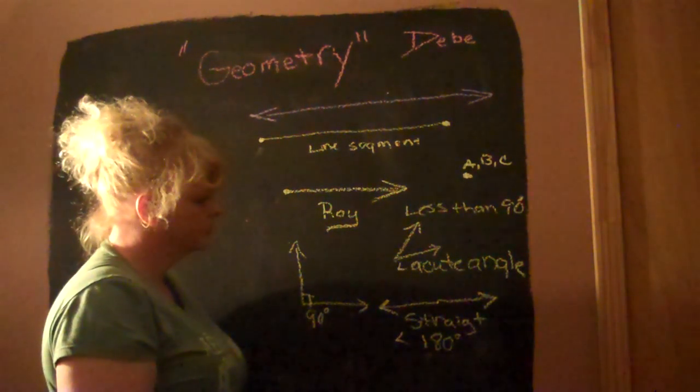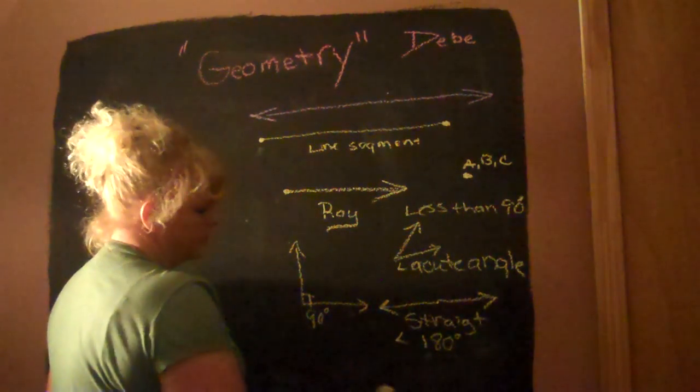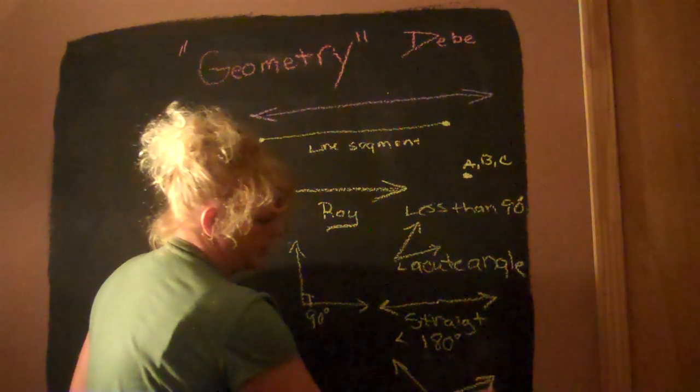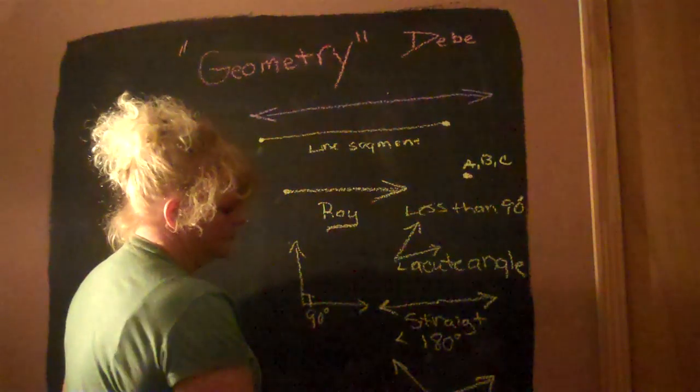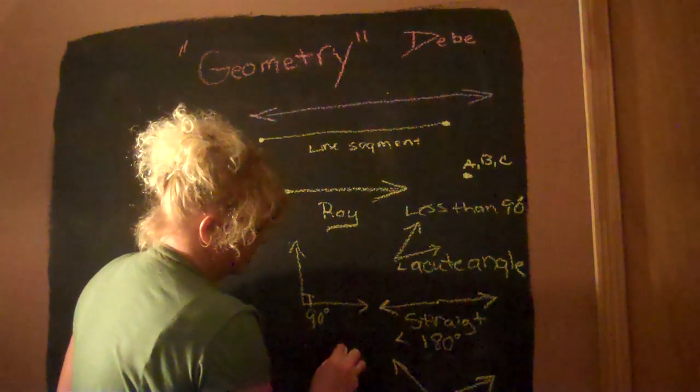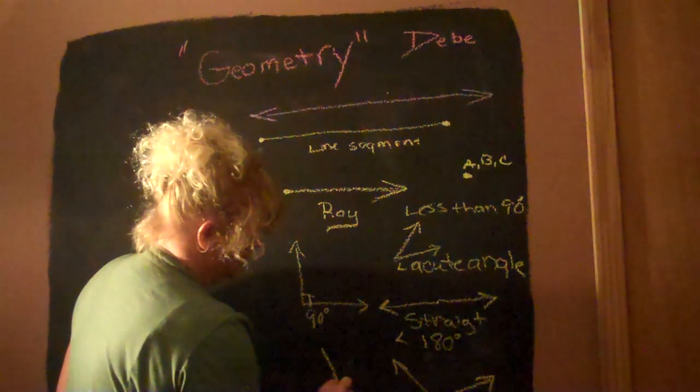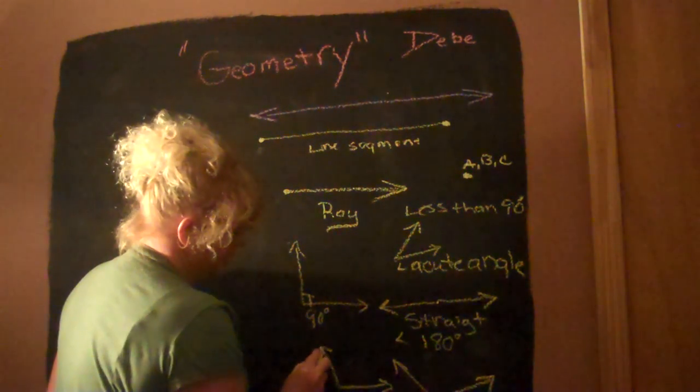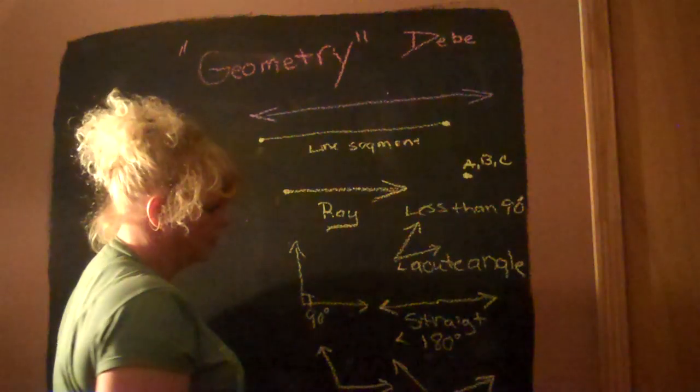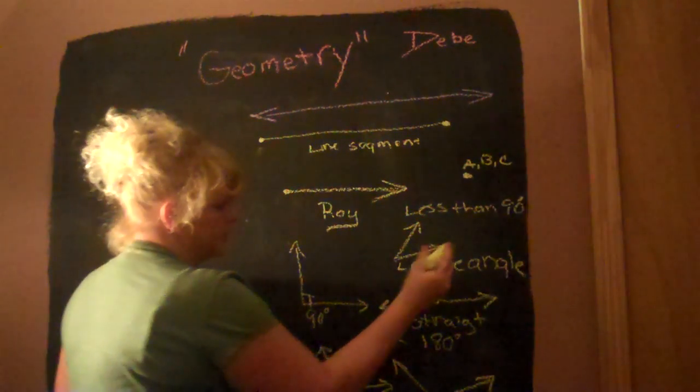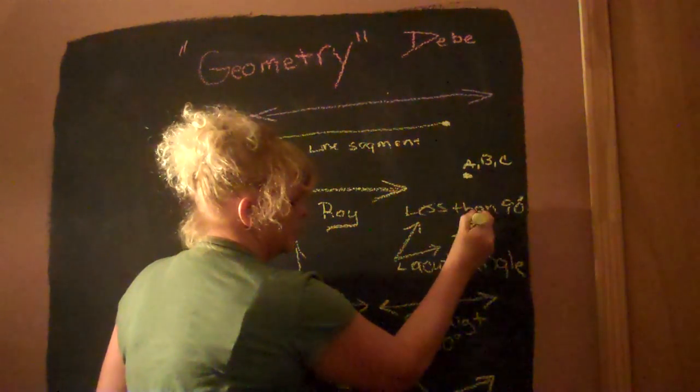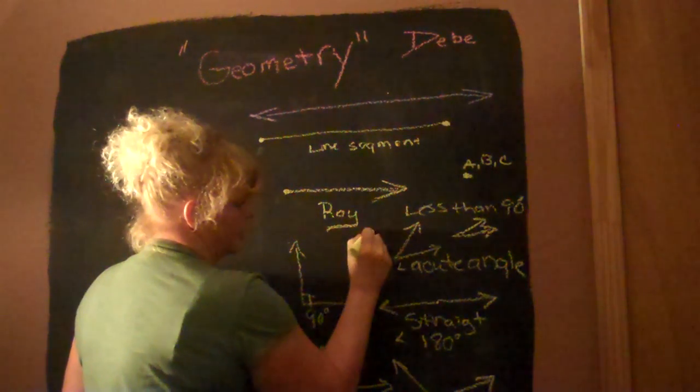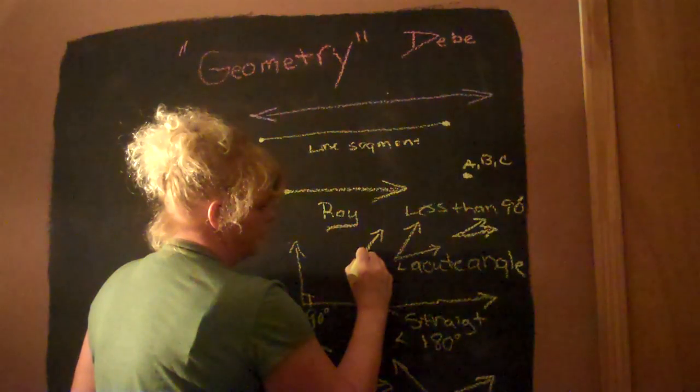Now, your acute angles can look like this as well. That's bigger than 90 degrees. And let's do another one. And if it's just slightly bigger than 90 degrees, it is also an obtuse angle. Acute angles can look like this. Or just right before the 90 degree mark. Okay?